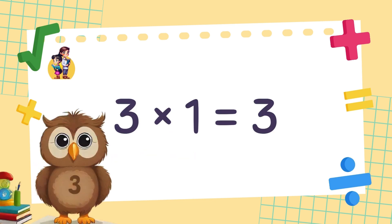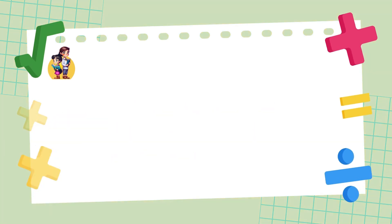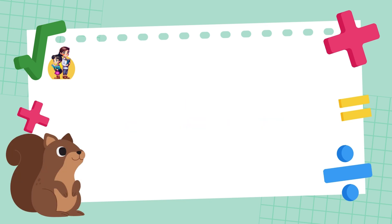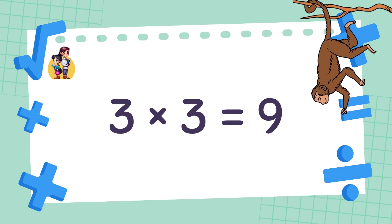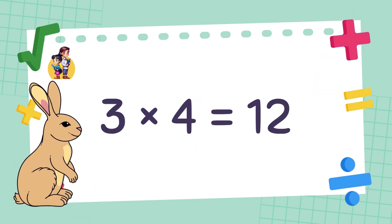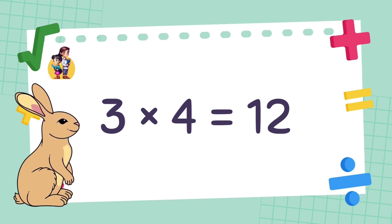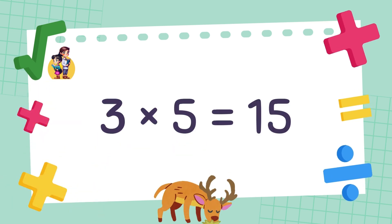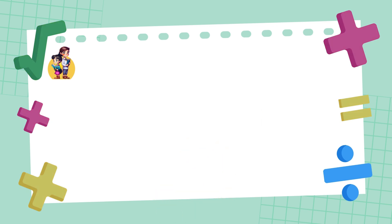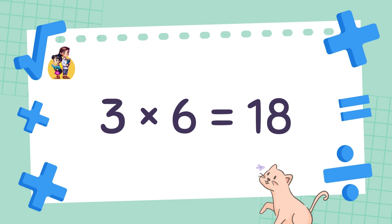3 x 1 is equal to 3. 3 x 2 is equal to 6. 3 x 3 is equal to 9. 3 x 4 is equal to 12. 3 x 5 is equal to 15. 3 x 6 is equal to 18.